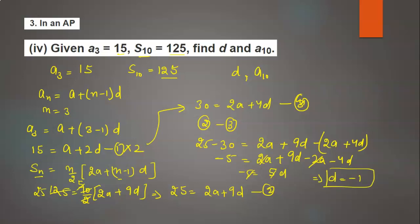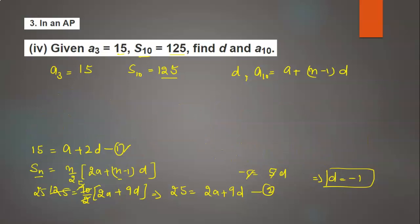Now we need to find a10. First we find a by substituting d equals minus 1 into equation 1, giving a equals 17. Now a10 equals a plus n minus 1 into d, which is 17 plus 10 minus 1 into minus 1, giving 17 plus 9 into minus 1, so 17 minus 9 equals 8. The 10th term of the AP is 8. Thank you.